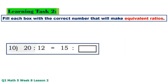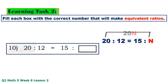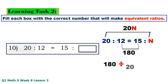Number 10: 20 times N equals 20N, 12 times 15 equals 180. 180 divided by 20 equals 9.